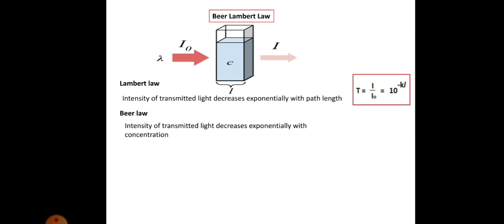Beer's Law states that the intensity of transmitted light decreases exponentially with concentration. Transmittance T is expressed as: T = I/I₀ = 10^(−K'C), where K' is a constant and C is the concentration.